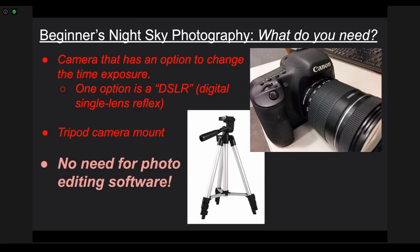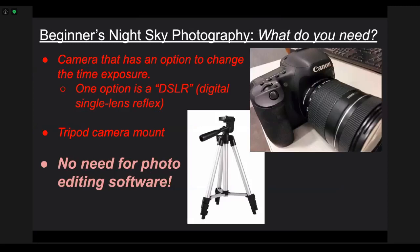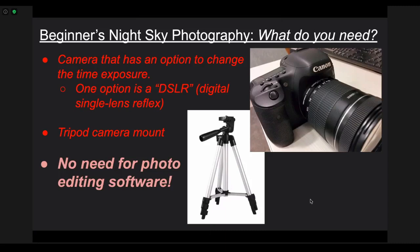At the very basic level, you need a camera that has an option to change the time exposure. These stars are tiny, and so you need to have your camera on for a longer amount of time — like up to 25 or 30 seconds — in order to see the stars in your picture. If you just take a snapshot, the lens is not going to collect enough light. One option is a DSLR, like this Canon here, but you don't need a camera this fancy. You might actually have one of those cameras at your house already.